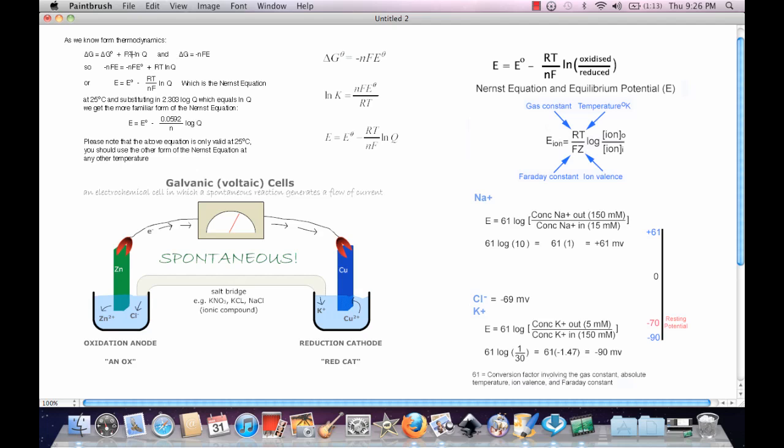The way you solve this problem is if you want to find the energy of the electrical potential, you would take the initial electrical potential, subtract that by RT divided by the number of moles times the Faraday's constant times the ln of Q.